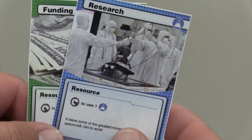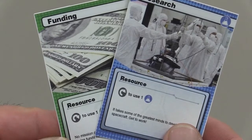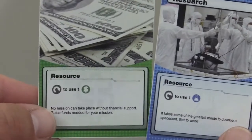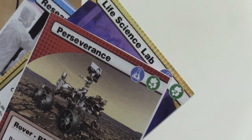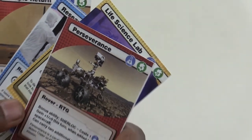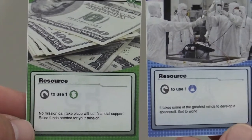Resources. There are two categories of resources cards: funding and research. Both are required to purchase spacecraft and instruments. The number inside the icons at the top right corner of the spacecraft and instruments cards indicates how much of each kind of resources needed to purchase that card and put it into play.